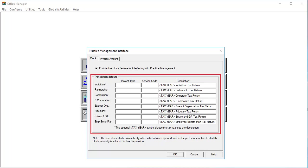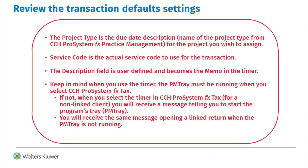Review the transaction default settings. If the client is linked, project and service code information entered here will default into the timer record. The project type is the due date description for the project you wish to assign. Service code is the service code to use for the transaction. The description field becomes the memo in the timer.